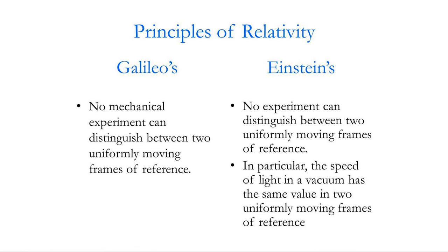No experiment can distinguish a state of absolute rest, and in particular, the speed of light is the same in any two uniformly moving frames of reference. These are the foundations on which Einstein builds.